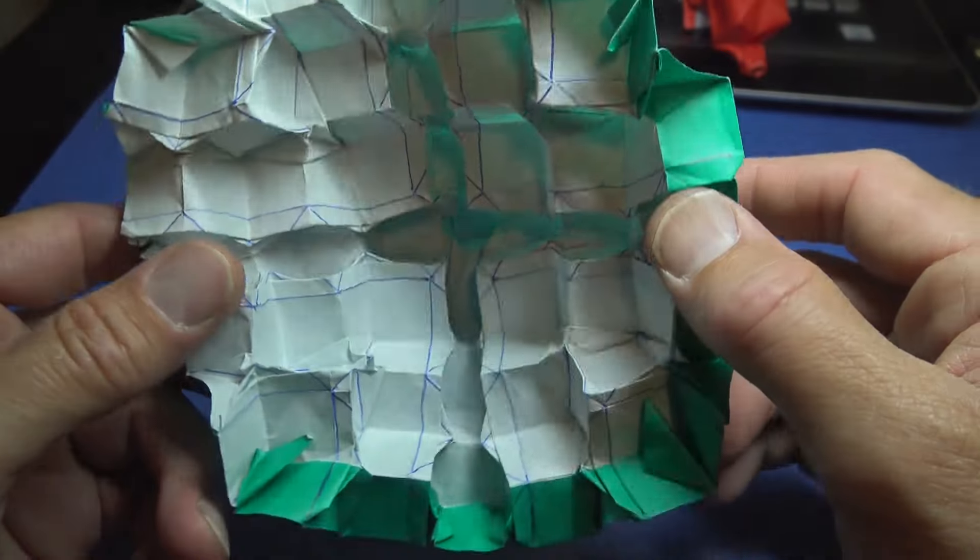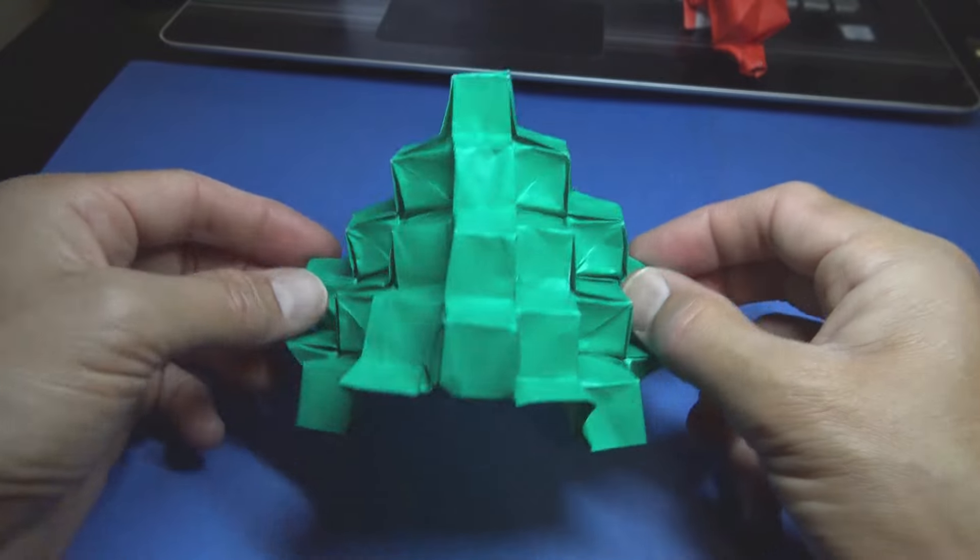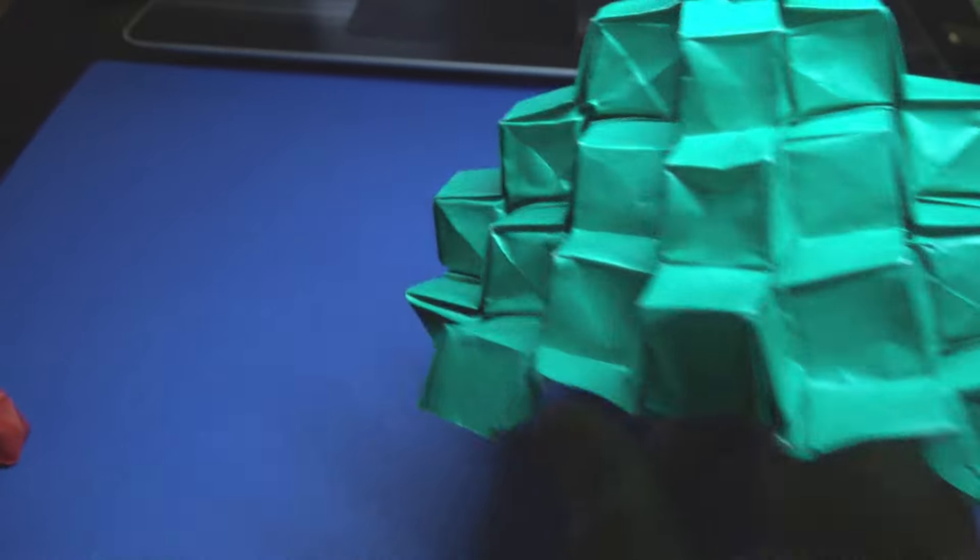So in comparison, this is folded from 6-inch kami, and it jumps like this. This one is folded from 3-inch kami, and it jumps a lot nicer. Just like that.